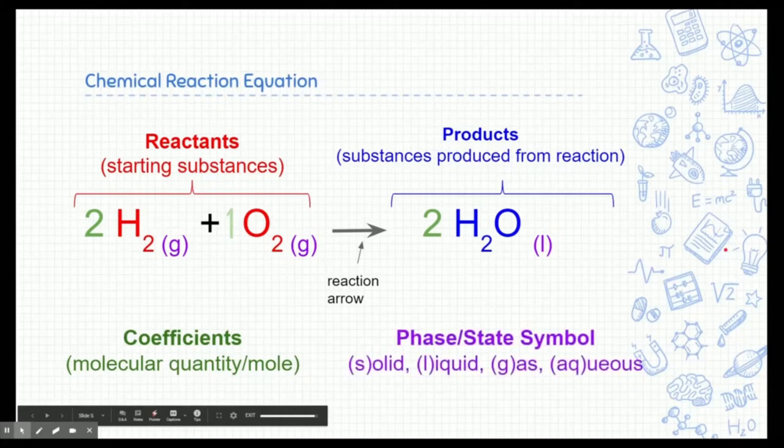The last thing are the little tiny phase or state symbols found on the bottom right-hand corner. Now the different phases or states these substances can be in is solid, liquid, gas, or aqueous. Now aqueous is a special type of phase symbol we only use in chemical equations to represent that the substance was dissolved in water.